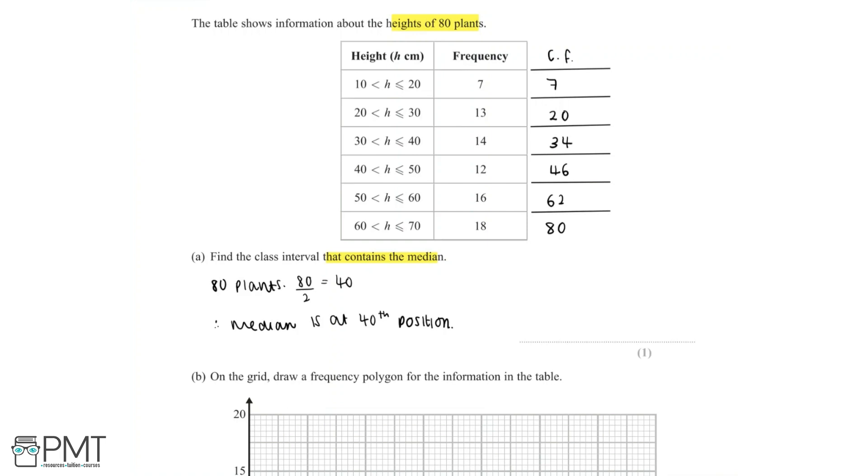Now between 40 and 50 centimeters, we have a cumulative frequency of 34 plus 12, which is equal to 46. That means the 40th value is found somewhere within the 40 to 50 centimeter interval. So the class interval that contains the median is 40 to 50 centimeters.